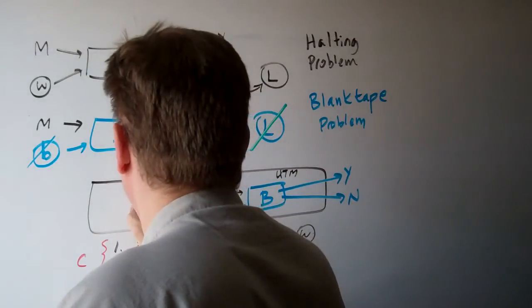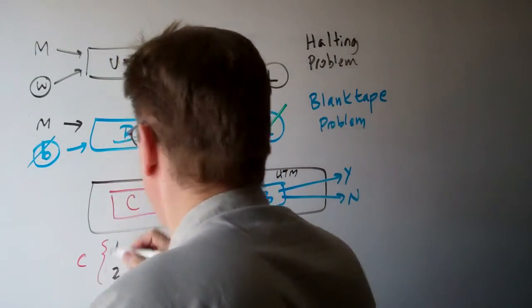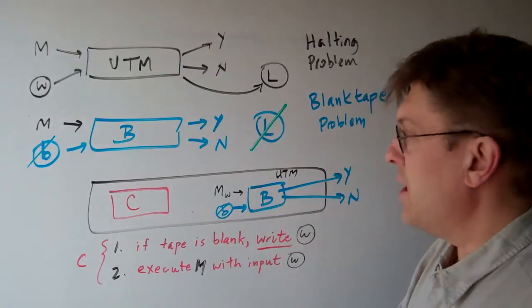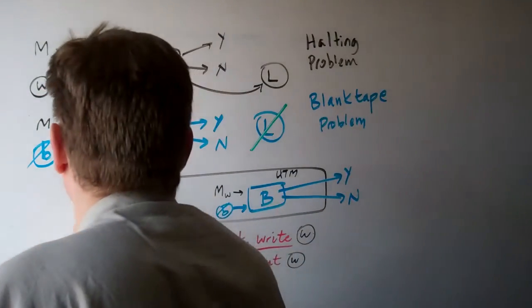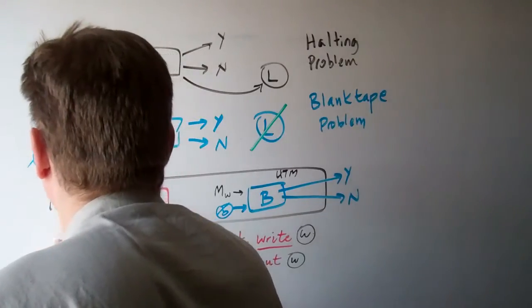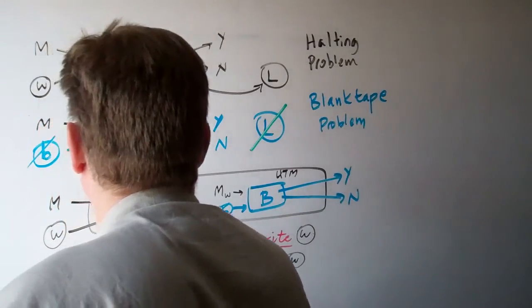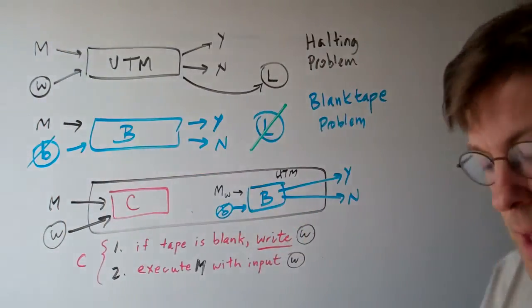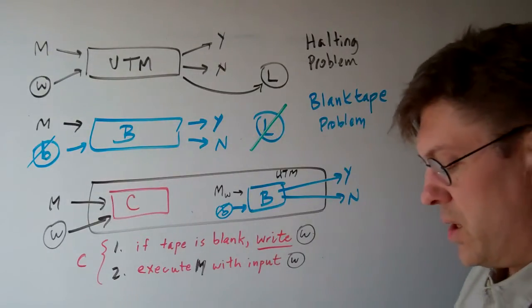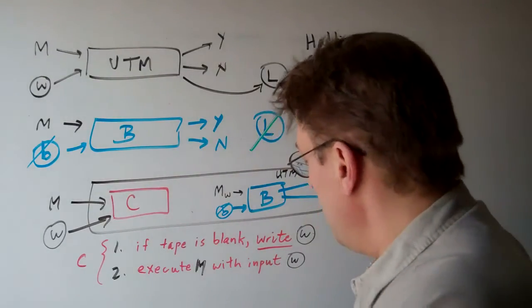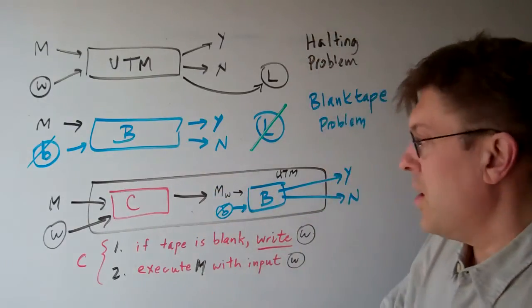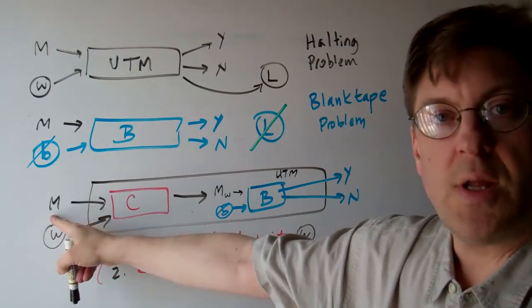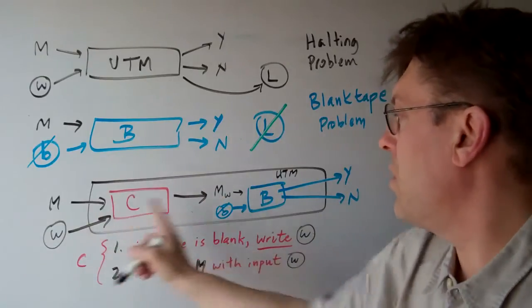Let's create a machine C. And this machine C is going to take the same inputs here, and it's going to output what? It's going to output a machine that's exactly the same as this machine, except it has the word W on the tape.